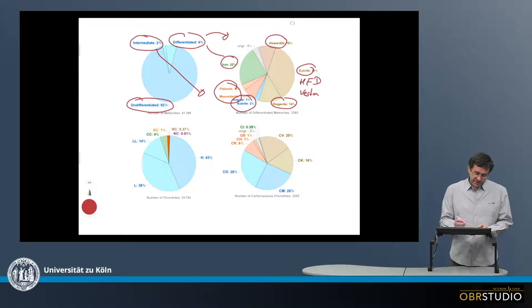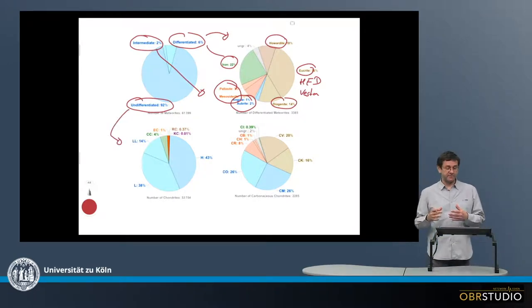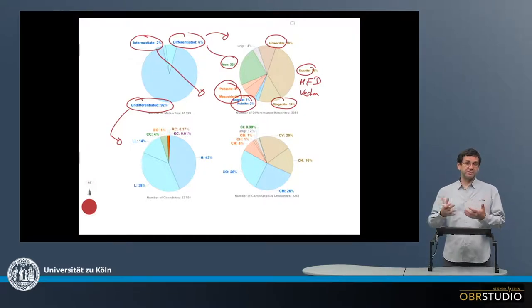Now when we go back to the undifferentiated, which are the vast majority, more than 90%, we see that among the undifferentiated, first that the undifferentiated are the chondrites, which is quite important.